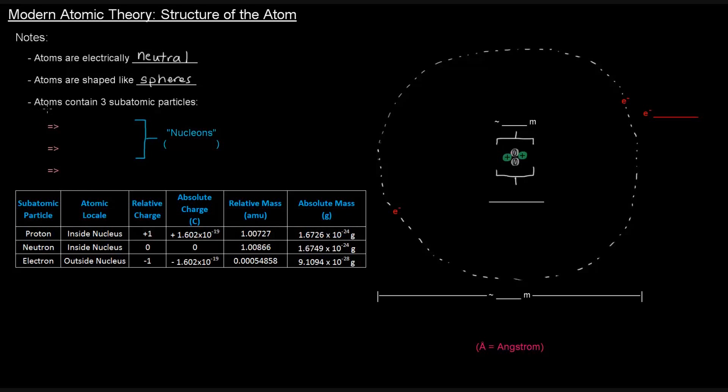Another thing, atoms contain three subatomic particles, which we've actually mentioned already. Protons, neutrons, and electrons. These subatomic particles are often represented by these little shorthands, where protons will be P plus, with a plus sign to indicate that they have a positive charge. Neutrons, N to the zero, indicating they have no charge. Electrons being E minus.